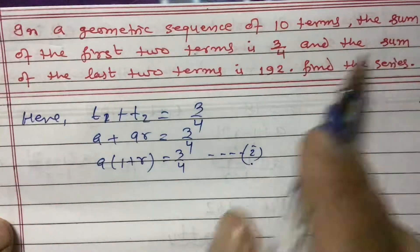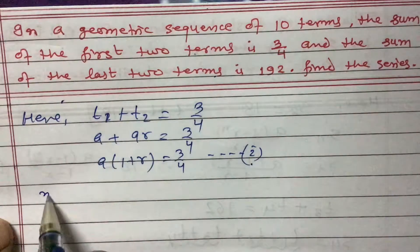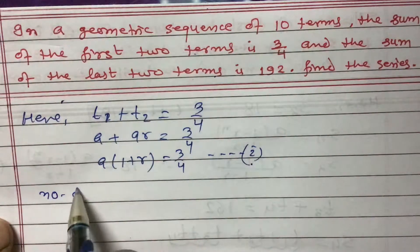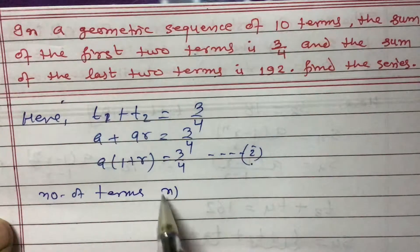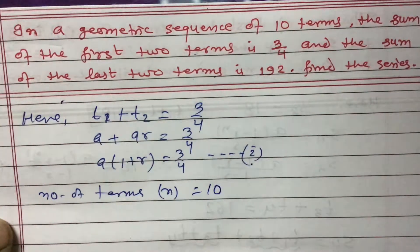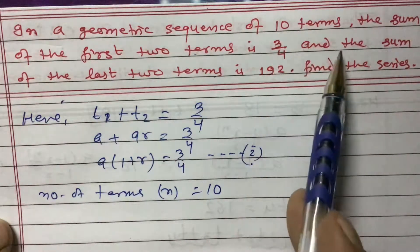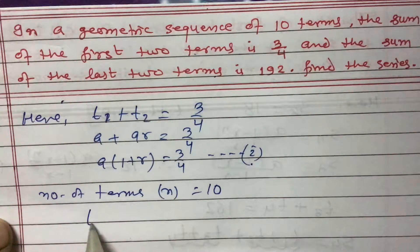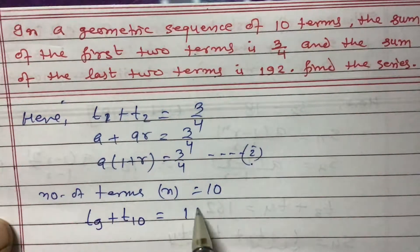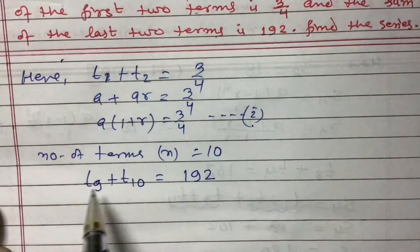Similarly, the number of terms n equals 10 is given. Since there are 10 terms, the last two terms are the ninth and tenth terms. So t9 plus t10 equals 192.